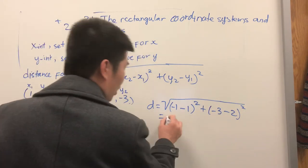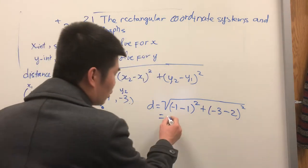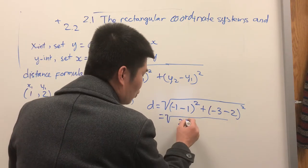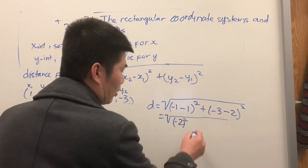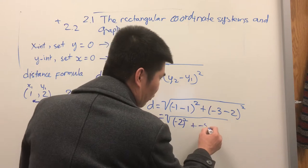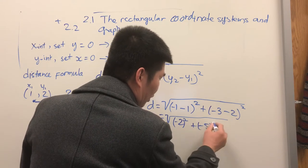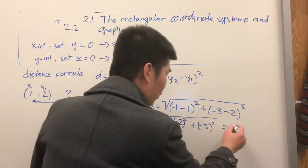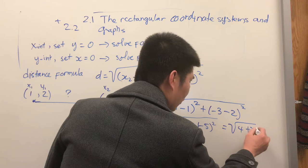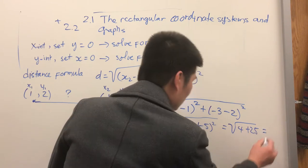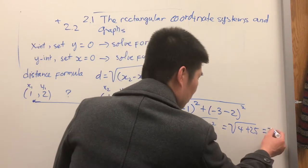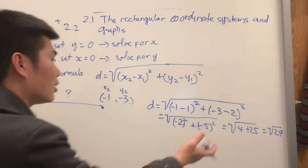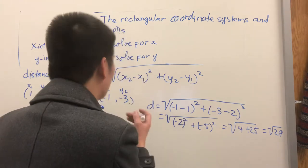So I have the square root of (-2) squared plus (-5) squared, which gives me the square root of 4 plus 25, which is the square root of 29. This is the distance between the two points.